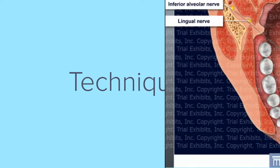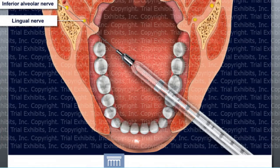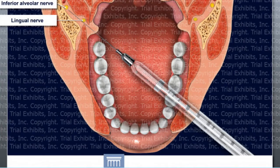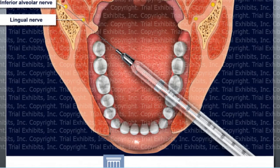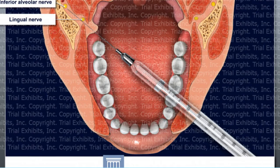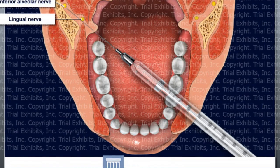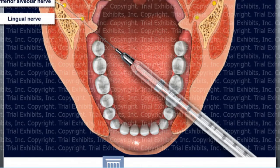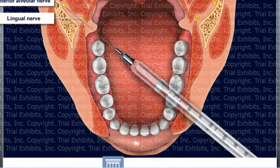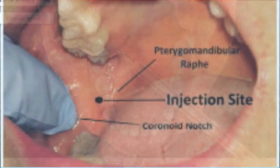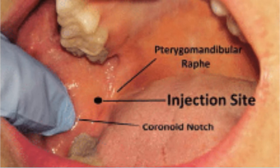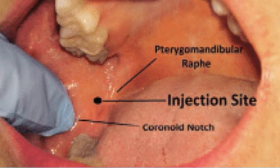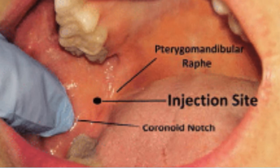Now how can you administer the block correctly? Number one, you come from the second premolar of the contralateral side. So if you want to give a block for the left side of the mouth, you come from the right side at the second premolar and give the injection. Then you will retract the cheeks, and once you retract the cheeks, you will feel a notch. This notch is called the coronoid notch.